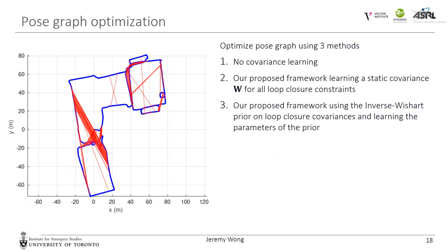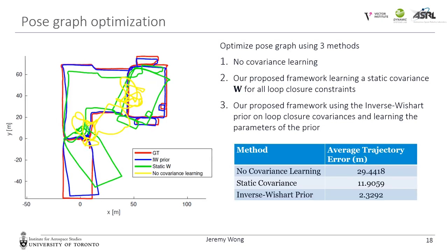For the last experiment, we move to a pose graph optimization problem with real outliers from false loop closures. The odometry and loop closure constraints were created from a bag-of-words place recognition system run on data from the RAWSEEDS project. Visually, we see many false loop closures in the figure. We optimize the pose graph using three methods: first, estimating the trajectory with no covariance learning; second, our framework learning a static covariance for all loop closure constraints; and third, our framework estimating both the trajectory and time-varying measurement covariances while learning parameters of our inverse Wishart prior. Without covariance learning, the trajectory is very poor. Learning a static covariance helps somewhat, but our framework with the inverse Wishart prior is closest to the ground truth, as confirmed by average trajectory errors calculated using the RAWSEEDS toolkit.